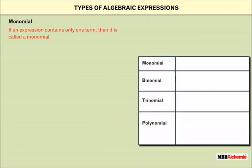Types of algebraic expressions. Monomial: If an expression contains only one term, then it is called a monomial.